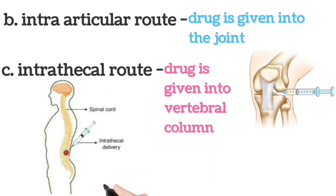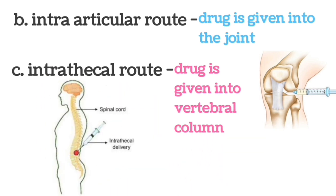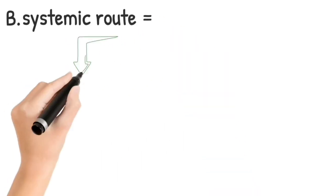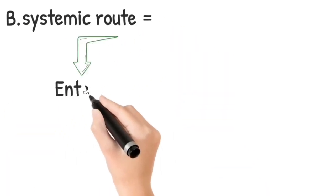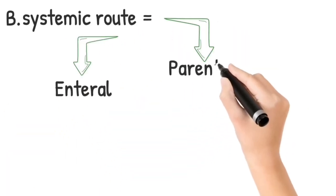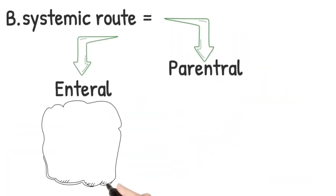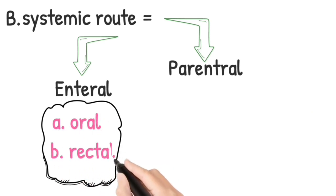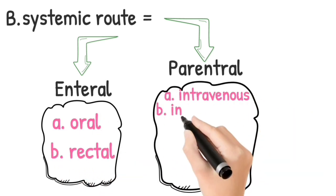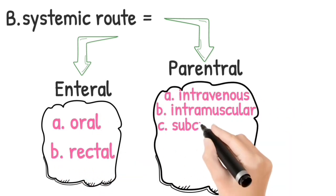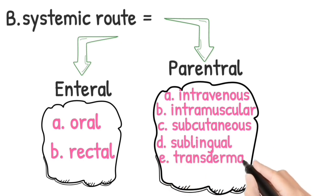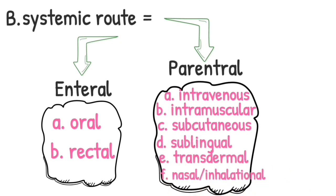The second type is systemic routes. It is further divided into two: enteral and parenteral. Enteral is further divided into oral and rectal. In parenteral, the routes include intravenous, intramuscular, subcutaneous, sublingual, transdermal, and inhalational.